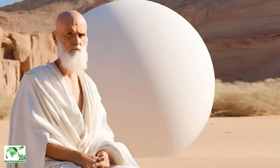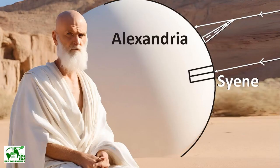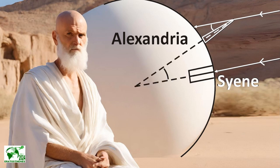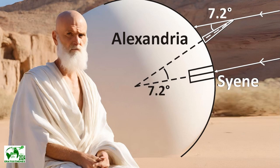Since the sun's rays are indeed parallel, the angle formed by the two verticals at the center of the earth must therefore be identical to the angle he measured with the shadow of the obelisk: 7.2 degrees.